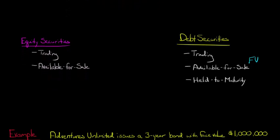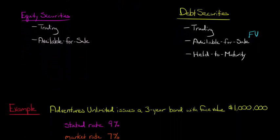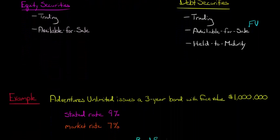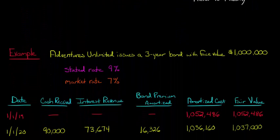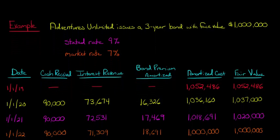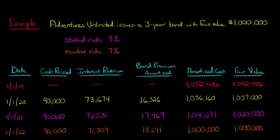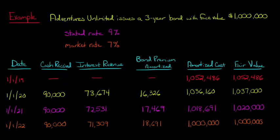I just want to show you how you put together the journal entries for that and how you value the bonds. I'm going to use the same example and the same effective interest table that I had when we talked about held-to-maturity securities.